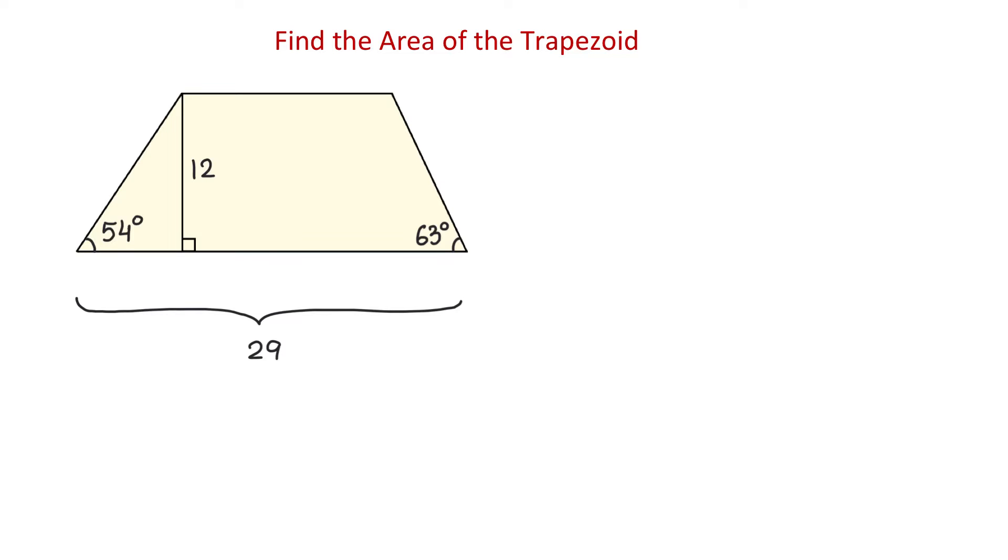In this figure, we have a trapezoid with the lower base of 29 units, the height of 12 units, one angle of 54 degrees, and another angle of 63 degrees. Using this information, we need to find the area of this trapezoid.